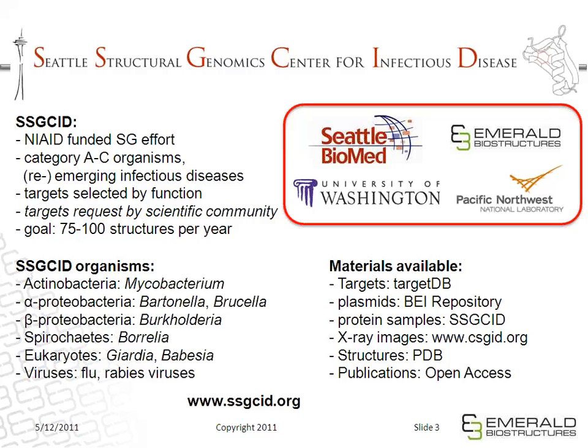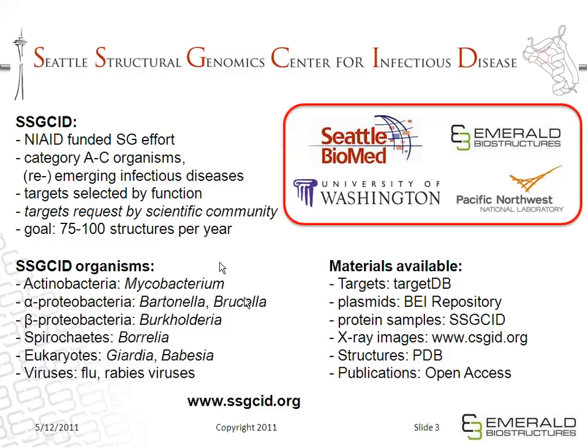The purpose of SSGCID is to generate a blueprint for structure-guided drug design against infectious disease organisms selected by the NIAID, including Class A through C organisms with an emphasis on emerging and re-emerging infectious diseases. Most targets are selected based on their essential function, though some have unknown function but appear to be conserved genes. The goal is to determine 75 to 100 structures per year over five years. As a publicly funded project, all materials — targets, plasmids, protein samples, raw diffraction images, and structures — are made available to the scientific community through repositories including TargetDB, the BEI repository, the CSGID website, and the PDB.